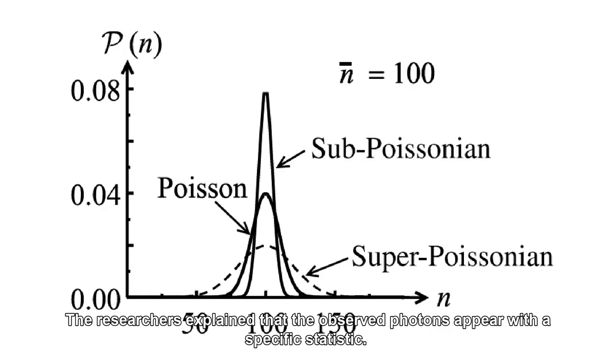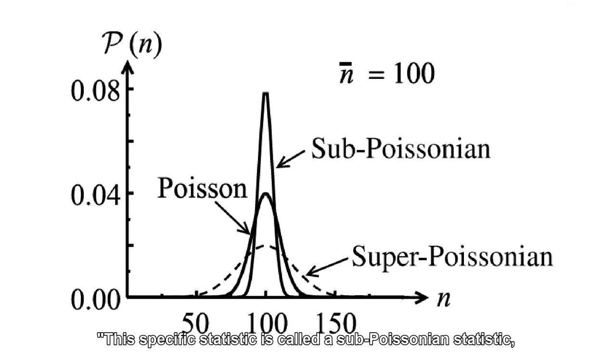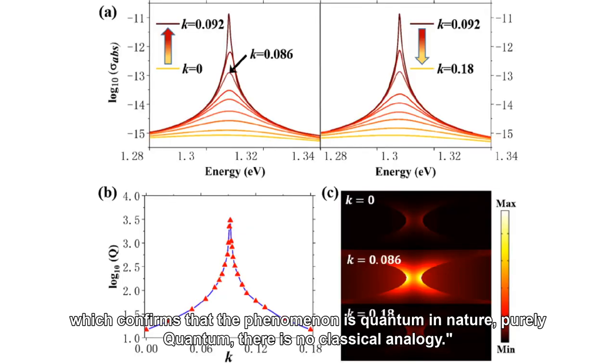The researchers explained that the observed photons appear with a specific statistic. This specific statistic is called a subpoisonian statistic, which confirms that the phenomenon is quantum in nature, purely quantum. There is no classical analogy.